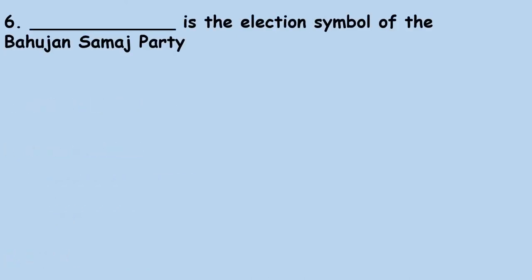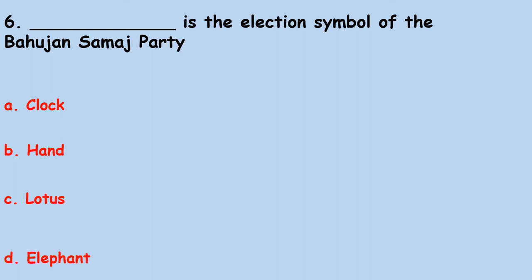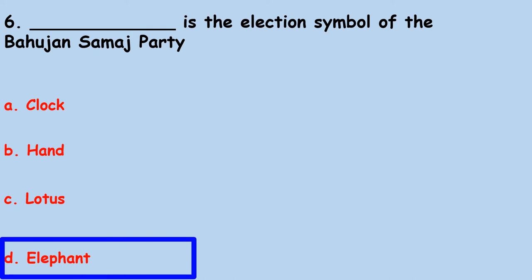The election symbol of the Bahujan Samaj Party — answer: D. Elephant.